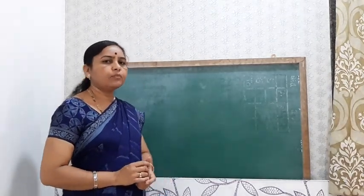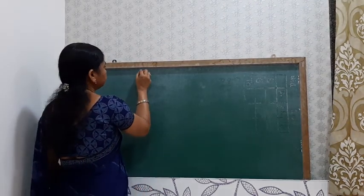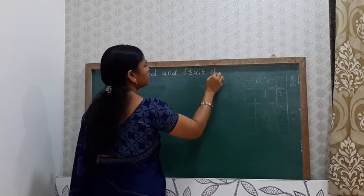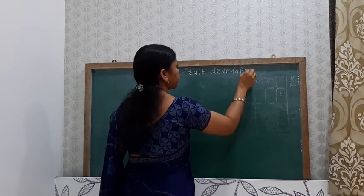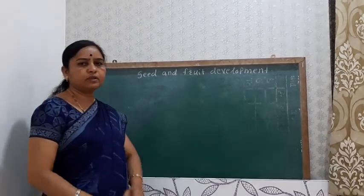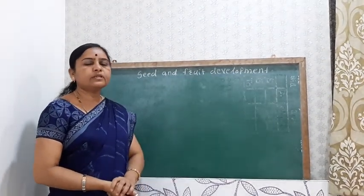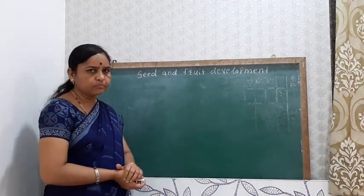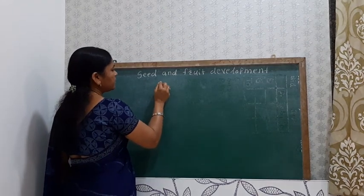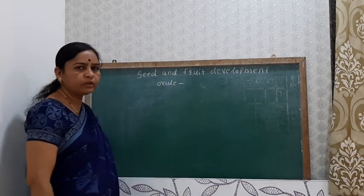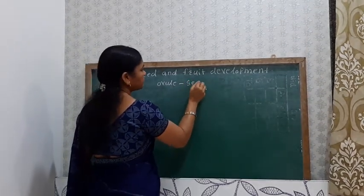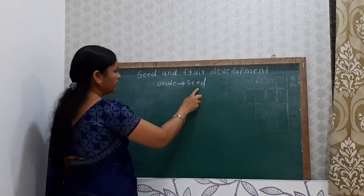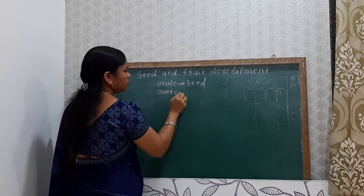Today we will see about seed and fruit development — how seeds and fruits are produced. After the fertilization process, changes take place. The ovule, which is an anatropous ovule, converts into the seed after fertilization. Similarly, the ovary converts into the fruit.